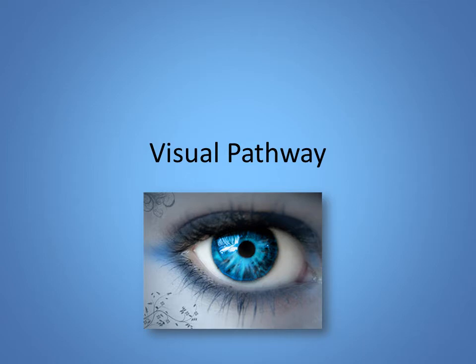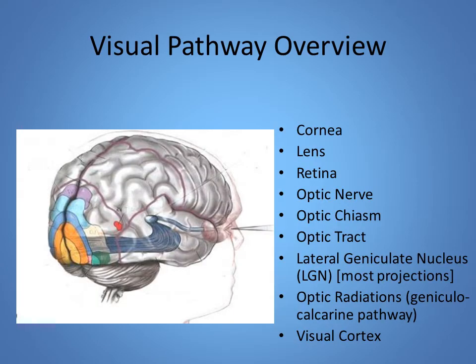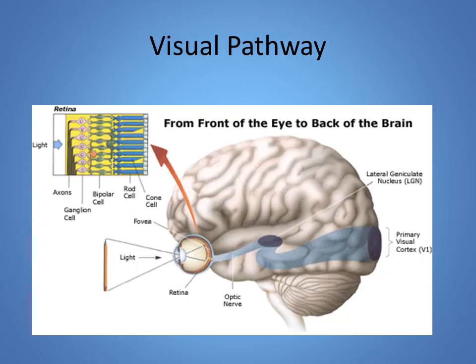Part three: the visual pathway. How does information taken in through the cornea, to the retina, through the fovea, get transmitted through the optic nerve to the brain? It's important to understand that what happens on our retina is a mirror image of what's going on in our visual field. When we lose a portion of our field of vision, we're talking about a section of the visual field, not a section of the retina.